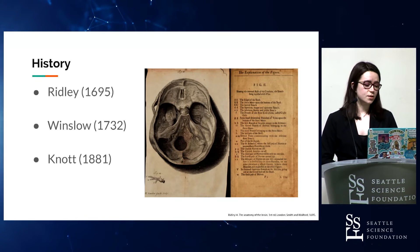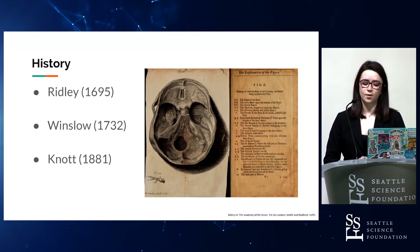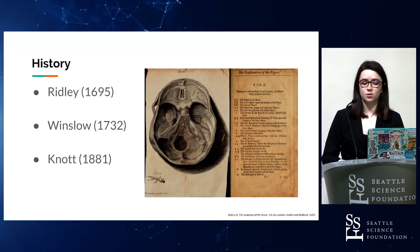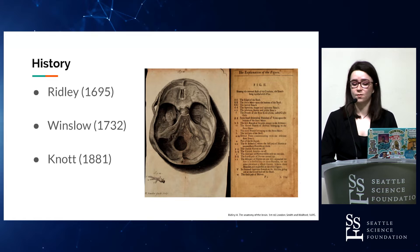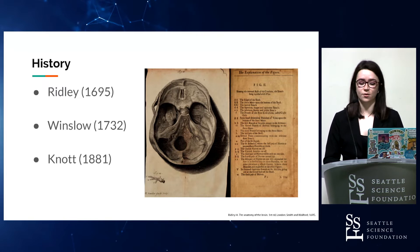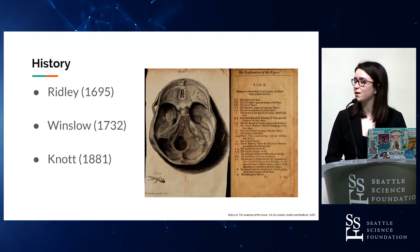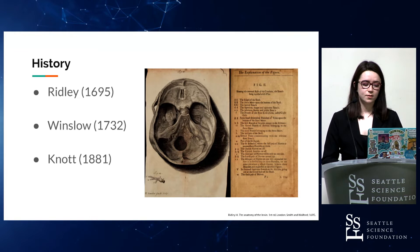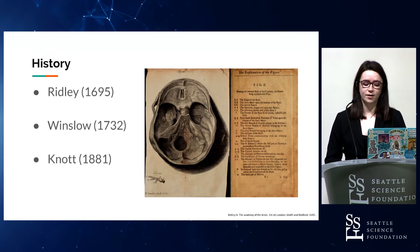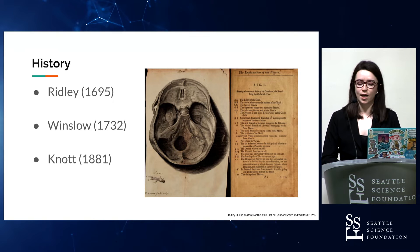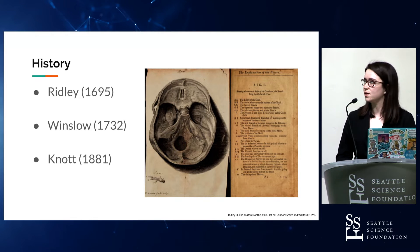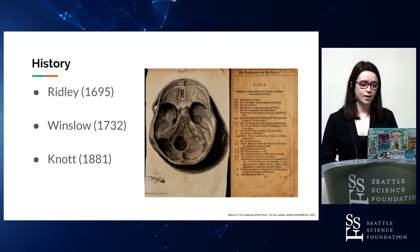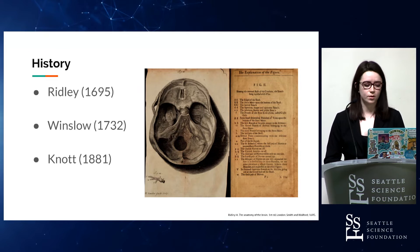In 1732, Winslow described the trabeculated pattern in the sinuses as resembling the structure of the corpus cavernosum of the penis, and therefore characterized these sinuses as cavernous. And then in 1881, Knott studied 44 cadaveric specimens in which six of these had multiple venous branches of the sinus circularis inferior, and 12 had a single inferior vein located below the pituitary.